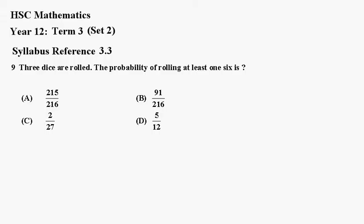Number 9. Three dice are rolled. The probability of rolling at least one 6 is A, B, C, or D.